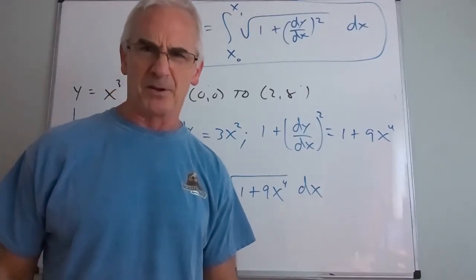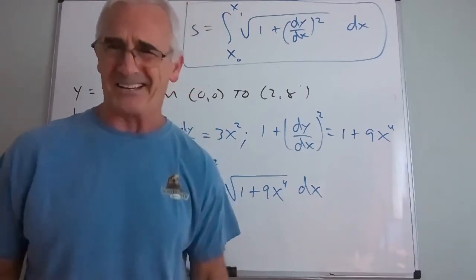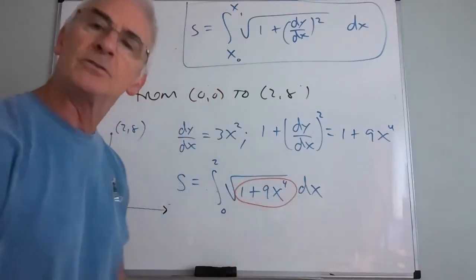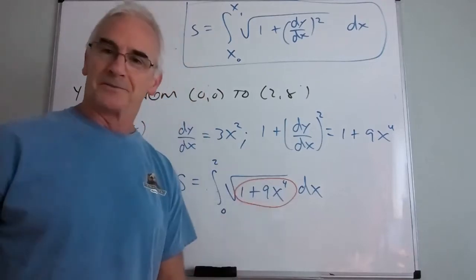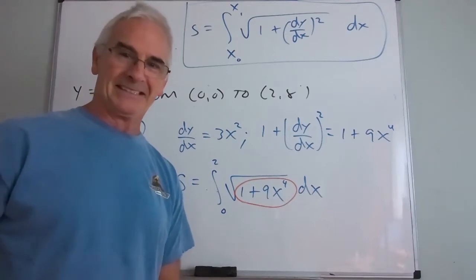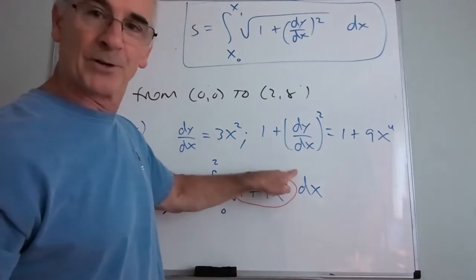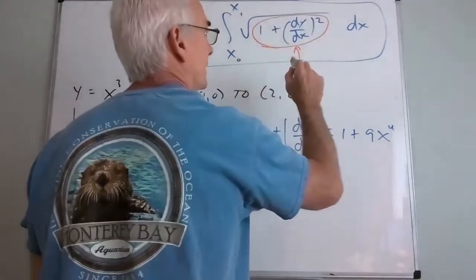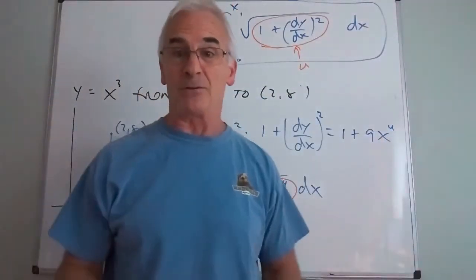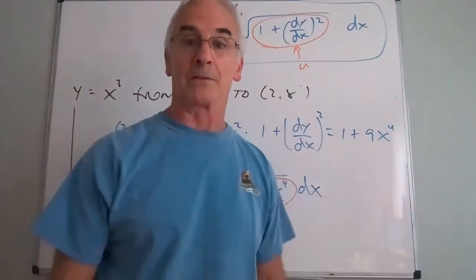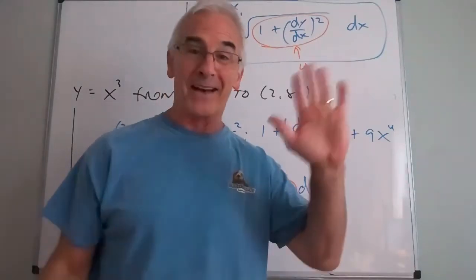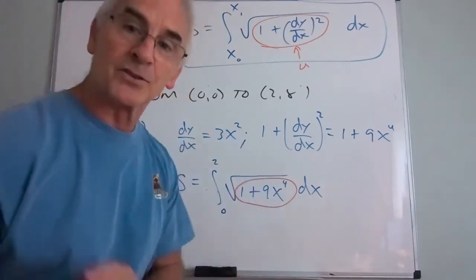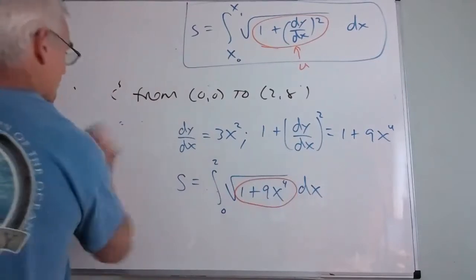In general, you'd want to try a u-substitution, letting u = 1 + 9x⁴. But the problem is there's no du — you'd need an x³ factor outside, and it's not there. That's why most textbooks say 'set up the integral for the length of the curve' and then you wave at it. Next semester you'll learn more techniques, but it's still not a very long list.